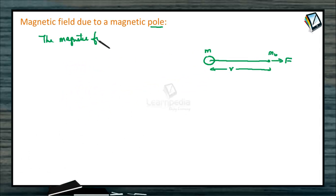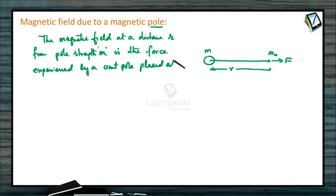The magnetic field at a distance R from pole strength M is the force experienced by a unit pole placed at that point. The B vector, or magnetic field, is the force experienced by M0.